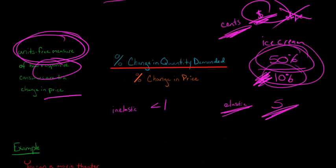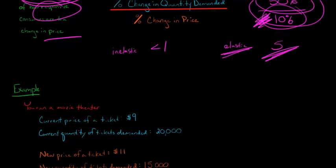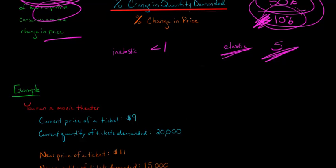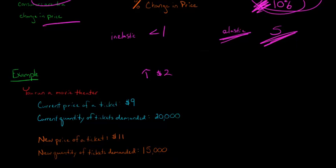Let me give a more complicated example to show how you calculate this in a real-world scenario. Let's say you run a movie theater and the current price of a ticket is $9. At that price, people want to buy 20,000 movie tickets. You're considering increasing the price by $2. If you increase the price to $11, that is going to decrease the amount of tickets demanded to 15,000 tickets — so an increase of $2 leads to a decrease of 5,000 tickets.